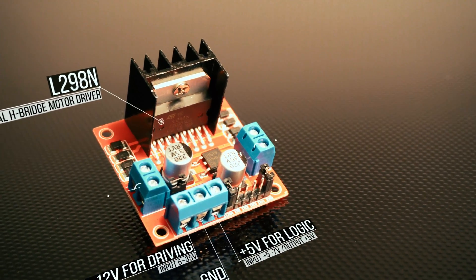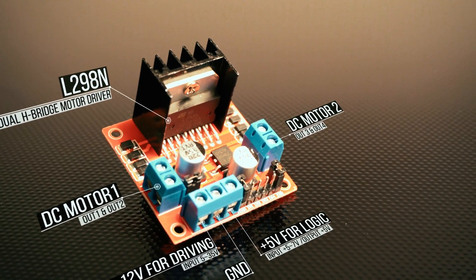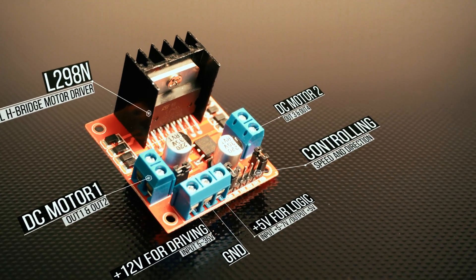Two sets of terminal blocks on both sides are for the two DC motors with very straightforward connections, and at last there are six pins at the front used to control the motors.